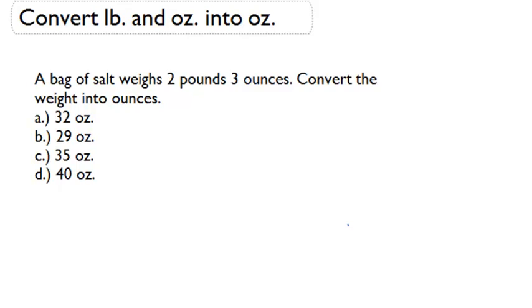And we need to convert that weight into ounces. The first thing we need to know here is the formula that 1 pound equals 16 ounces.